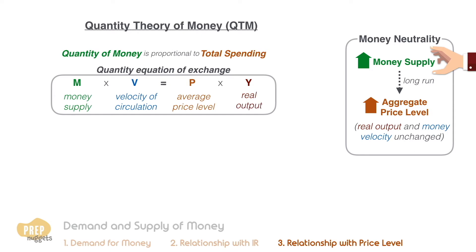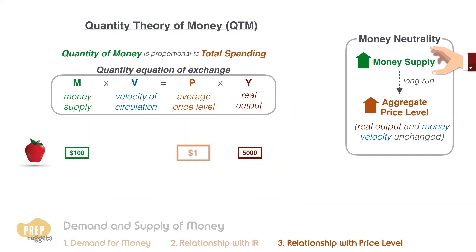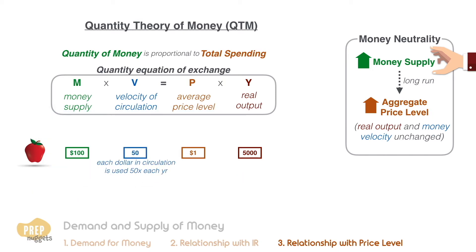Now, in a simple economy where only apples are produced and consumed, if the money supply is $100 and 5,000 apples are produced each year and sold for $1 each, the velocity of circulation has to be 50. This means that each dollar is used 50 times to buy apples in a year within the economy.